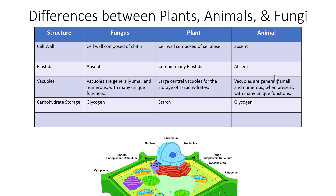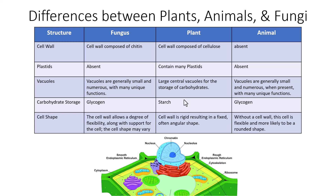All cells have the ability to store carbohydrates, but there are differences in the type stored. Fungi and animal cells store their carbohydrates in the form of glycogen, whereas plants store their carbohydrates in the form of starch. So fungi and animals store their polysaccharides as glycogen, while plants store their polysaccharide as starch.